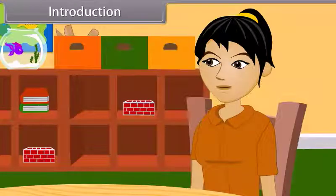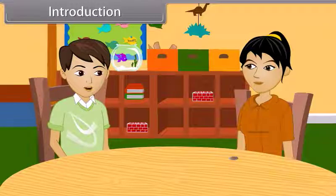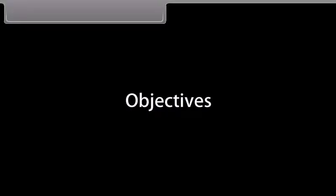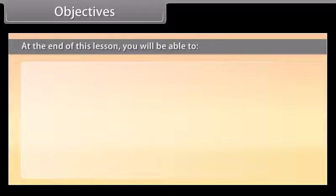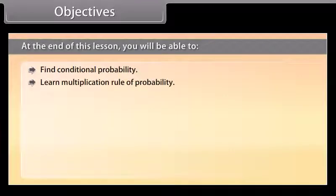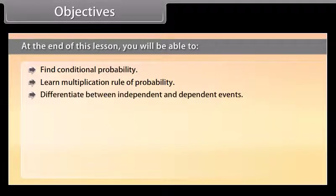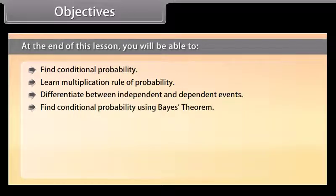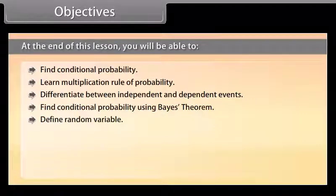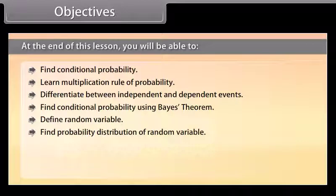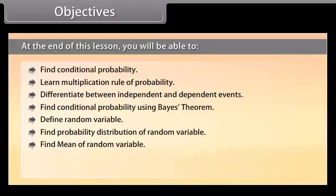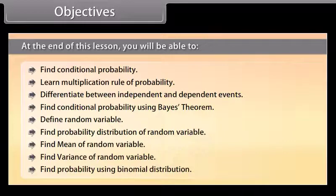Would you like to learn more about it? Yes, of course! Come, I will teach you about probability. It's a very interesting topic, I am sure you will like it. At the end of this lesson, you will be able to find conditional probability, learn the multiplication rule of probability, differentiate between independent and dependent events, find conditional probability using Bayes' theorem, define random variable, find probability distribution, mean, variance of a random variable, and find probability using binomial distribution.